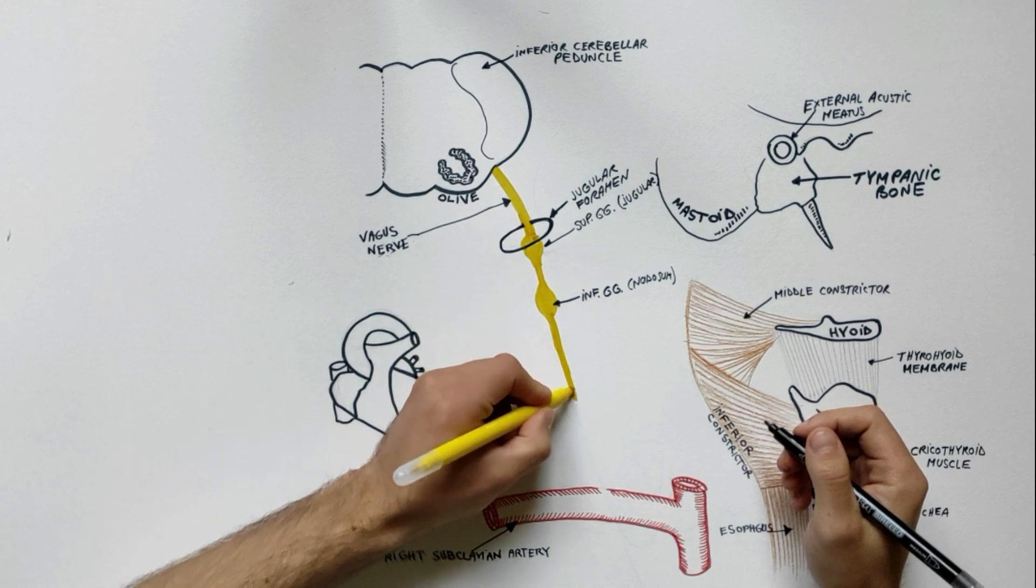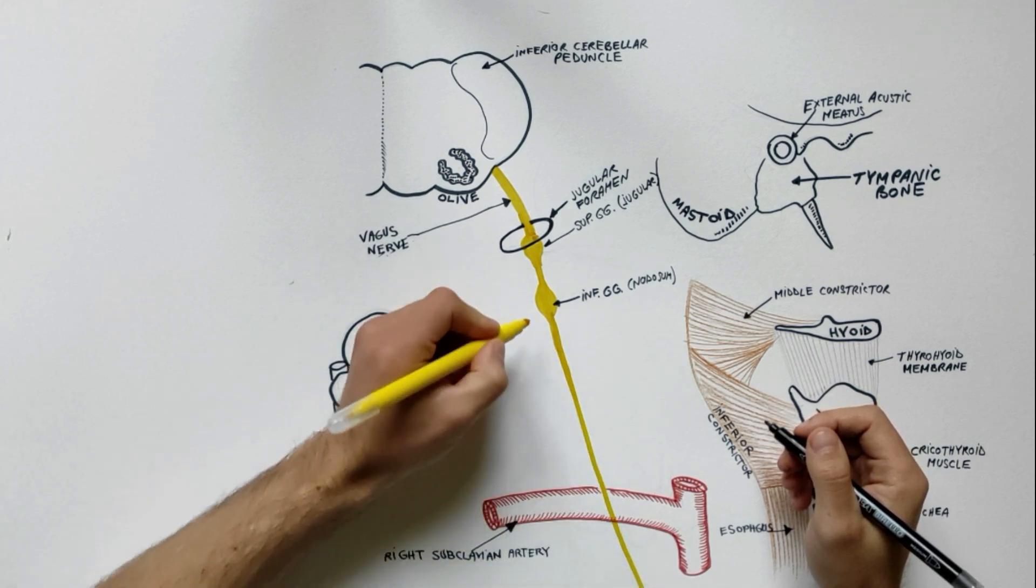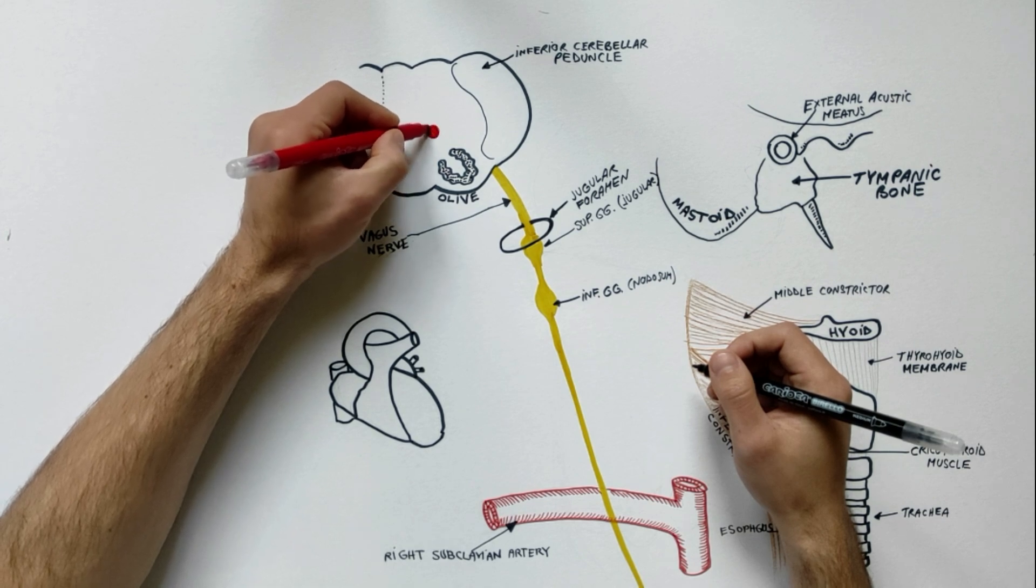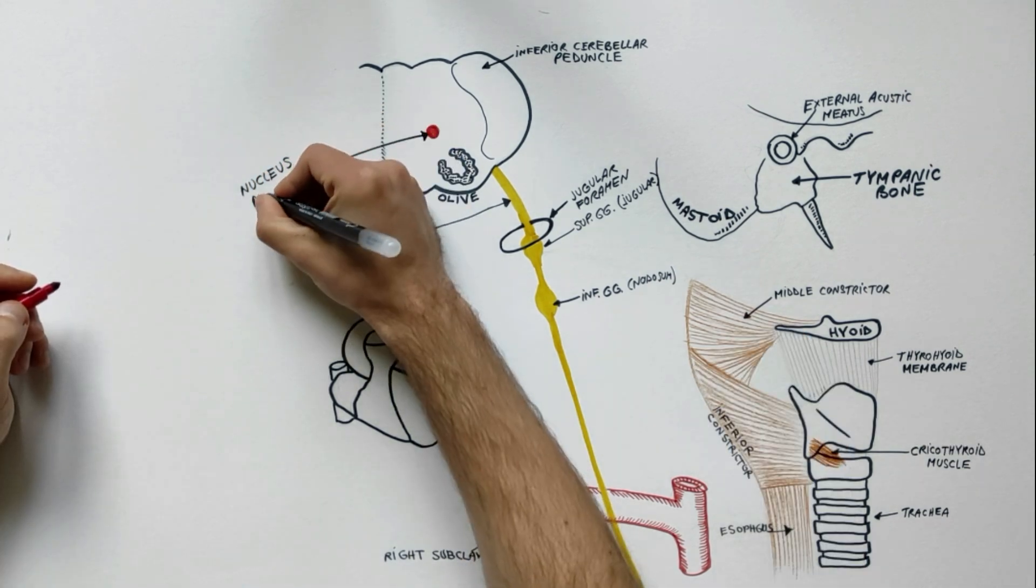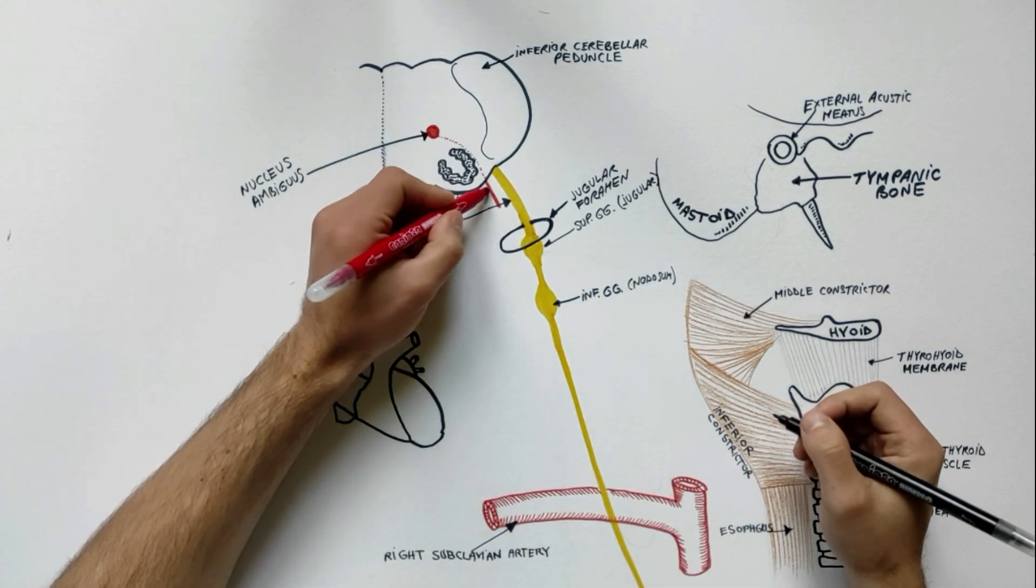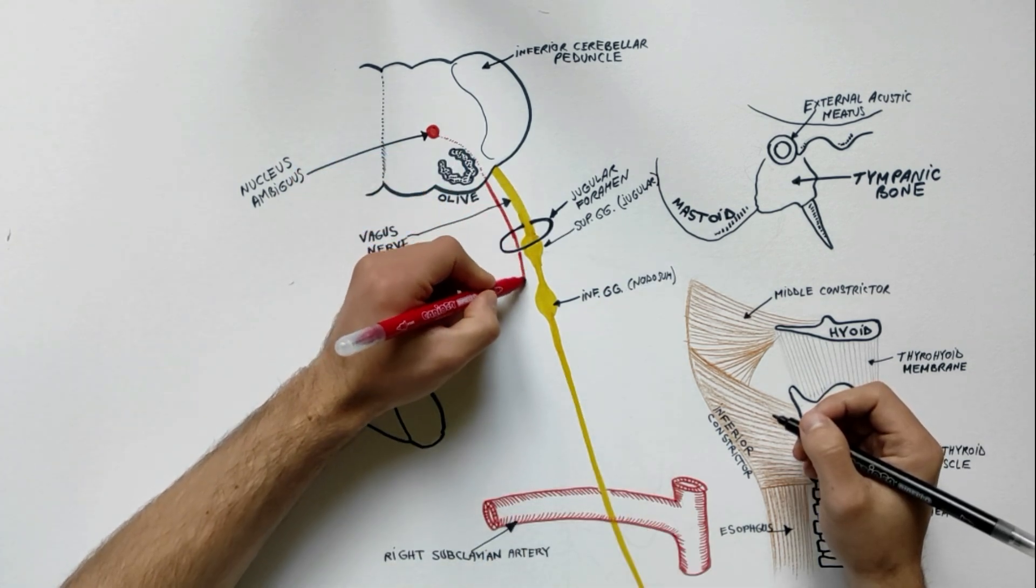As the vagus continues below the inferior ganglion, it is joined by the motor fibers from the nucleus ambiguus that have travelled briefly with the cranial root of the accessory nerve.